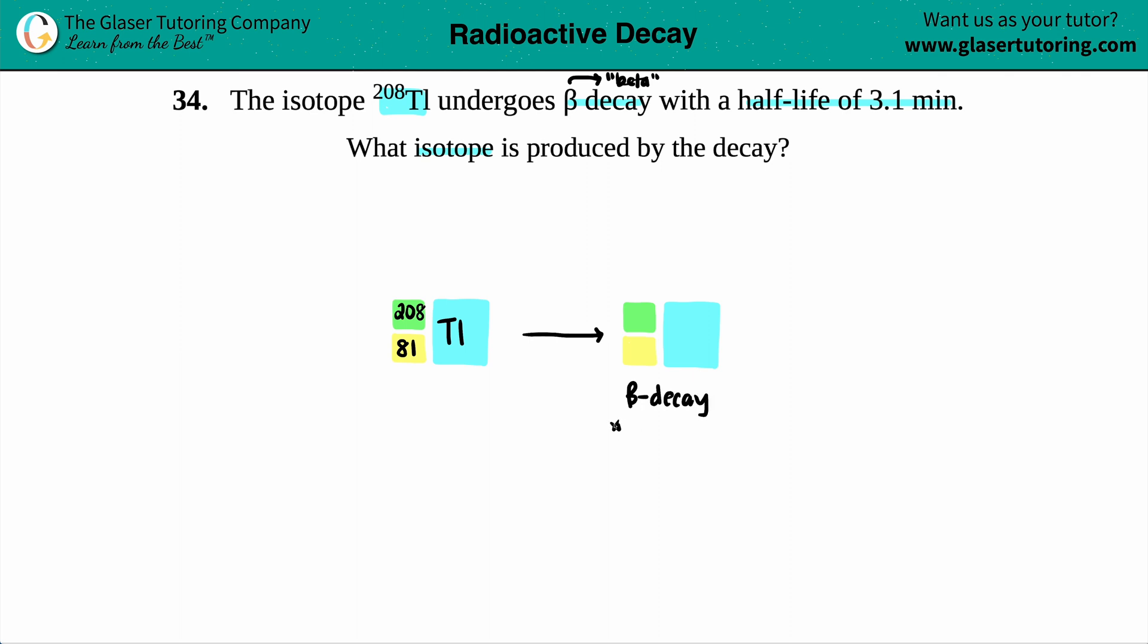Just know that beta is a fancy way for saying an electron. So whether you put the beta here or you put an e, it's fine. Maybe we'll just do the B—that's the Greek B, I believe. That's why it's beta.